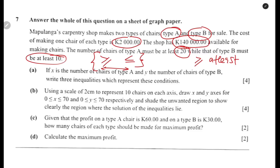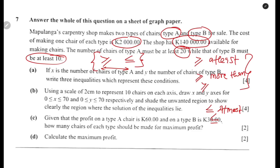So 'at least' means greater or equal to. 'More than' also means greater or equal to — you're going beyond. 'Exceed' is also greater or equal to. For less or equal to, 'at most' means less or equal to. 'Not more than' means less or equal to. 'Not exceed' also means less or equal to. These are the main inequalities used.